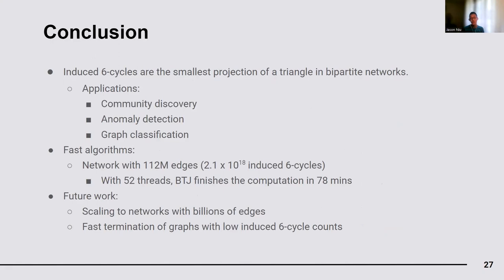In conclusion, induced six-cycles are important in a variety of real-world applications such as community discovery and anomaly detection. To the best of our knowledge, this is the first inquiry in induced six-cycle counting. Experiments on real-world bipartite networks show that our best algorithm, BatchTripletJoin, is highly parallelizable in relation to the number of processors and enables practical computation for large networks with up to half a billion edges. As future work, we will investigate scaling our algorithm to larger networks with billions of edges. We will also extend our methods to handle networks with low induced six-cycle counts. One interesting question in this context is how quickly one can terminate the computation if the graph has few induced six-cycles.